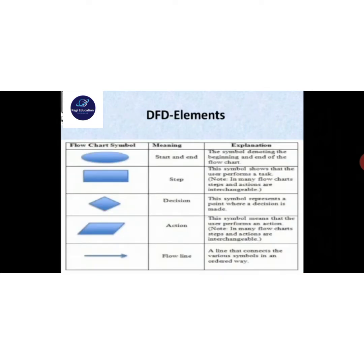DFD elements — here a table shows flowchart symbols with their meanings and explanations. The oval symbol means start and end, denoting the beginning and end of the flowchart, like program starting and program ending. The square step symbol shows that the user performs a task; in many flowcharts, step and action are interchangeable.